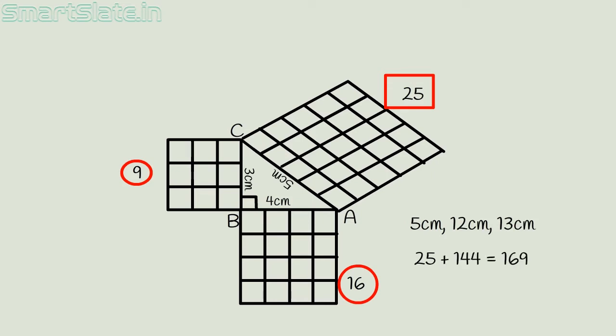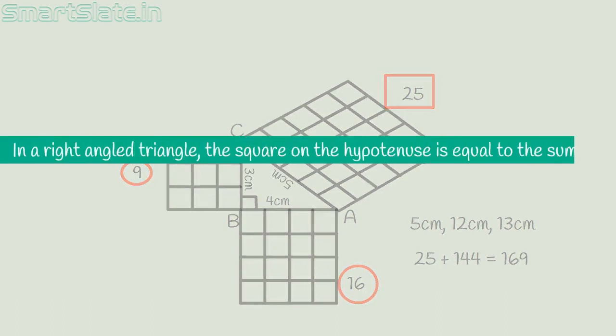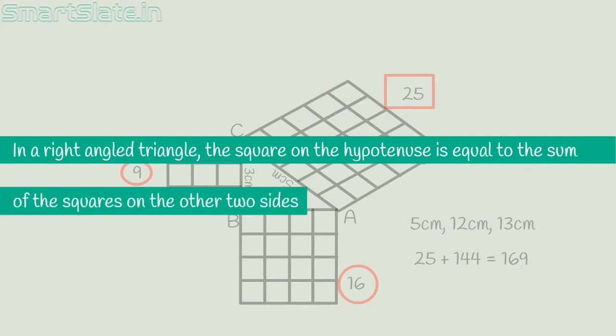From this observation, we can infer: in a right-angled triangle, the square on the hypotenuse is equal to the sum of the squares on the other two sides.